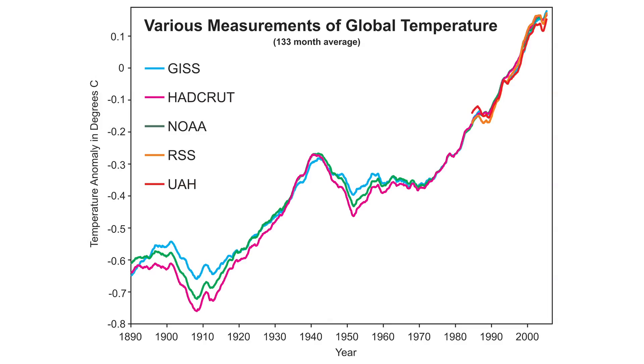What other temperature measurements are there? There's the surface thermometer network, and I think that's actually very robust. Many completely independent groups have worked on it and they all come up with essentially exactly the same answer. There haven't been the kinds of revisions to the surface record that there have been to the satellite record. The errors discovered in the satellite record are not nearly the same kinds of errors found in the surface record. So I think the surface record is quite a bit more robust, and I trust it much more than the satellite record.